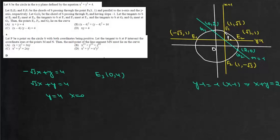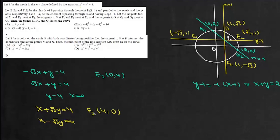In the same way, the tangent at f1 is x + √3·y = 4 and at f2 is x − √3·y = 4. Solving gives x = 4 and y = 0. So f3 is (4, 0).